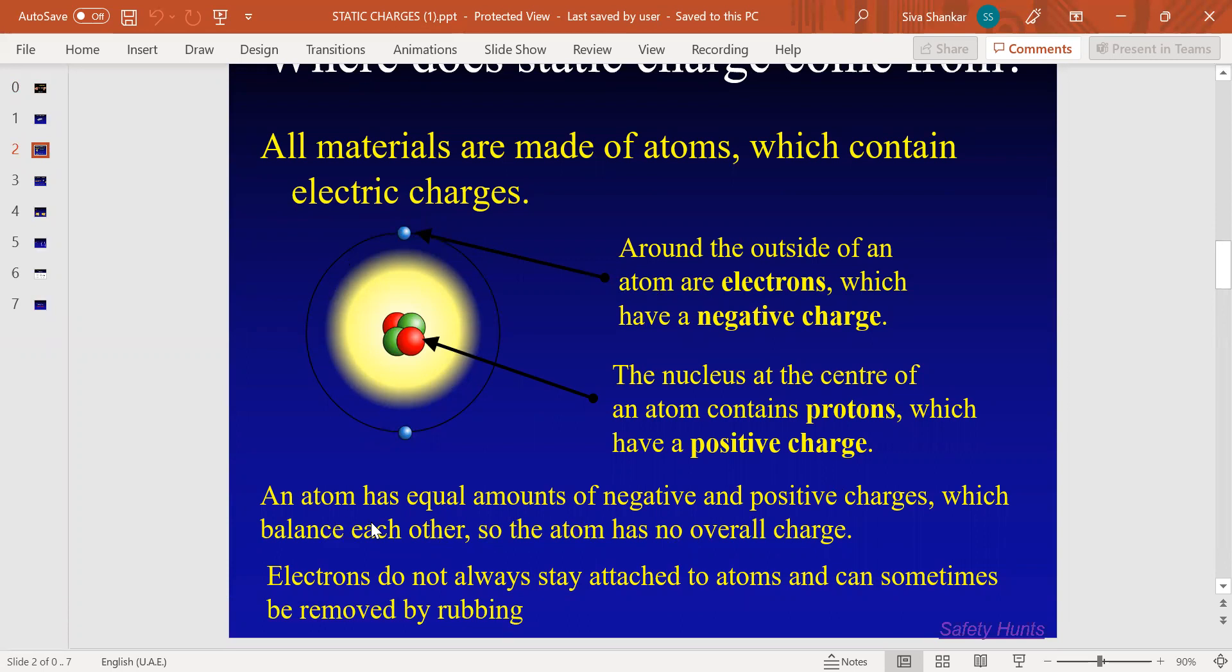An atom has an equal number of positive and negative charges which are in balance, so there is no overall electric charge. Electrons do not stay in one place; they tend to move here and there by rubbing and friction.